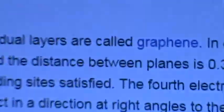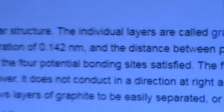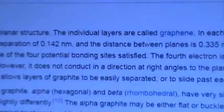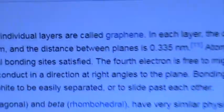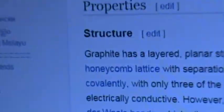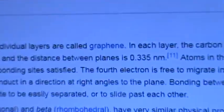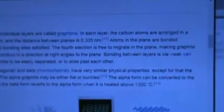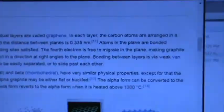The individual layers are called graphene — there's our answer. Graphene equals godson equals Jesus, and graphite equals godfather. So graphite, which goes to father, is bigger than the son. Graphite is composed of layers of graphene. Now, remember the word carbon goes to Christ.